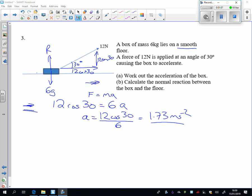To find the normal reaction, we're looking in the vertical direction. How much up we've got is R. We've also got the 12 sine 30, but going in the opposite direction, we've got the minus 6G.